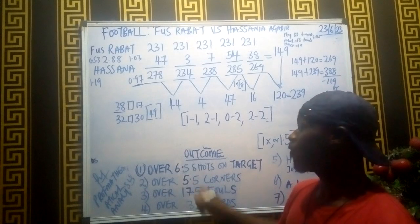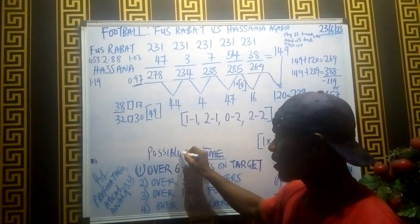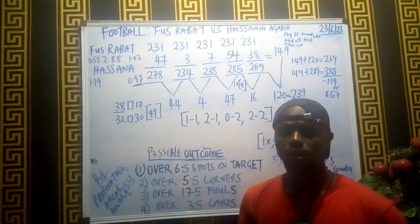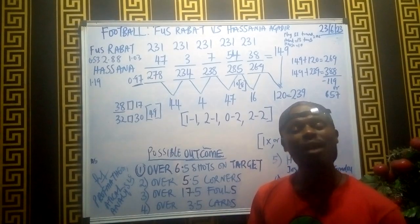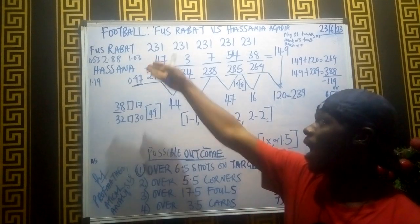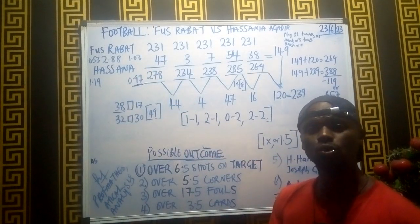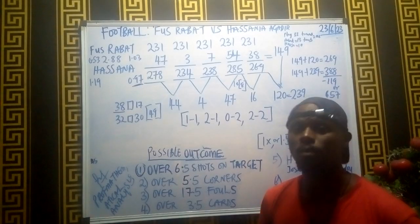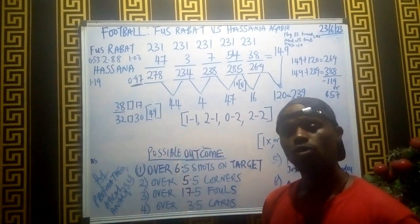Followers of football, Prof Mathematical Analysis is meant to increase our love for football, not to neglect the deficiencies of the losing team. So you may find that FUS Rabat wins but Hassania still shoots two to three shots on target, which is a viable outcome for bookmakers.